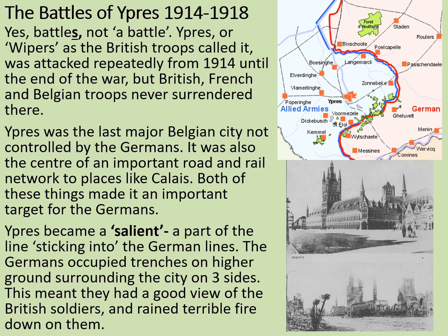Ypres became a salient — a part of the line sticking into the German defences. The Germans occupied the trenches on higher ground surrounding the city on three sides, which meant that they had a good view of the British soldiers and rained down terrible fire on them. From the photograph at the bottom of this slide we can see an example of the destruction — the famous medieval cloth hall and cathedral in Ypres city centre, absolutely levelled by the end of the war.